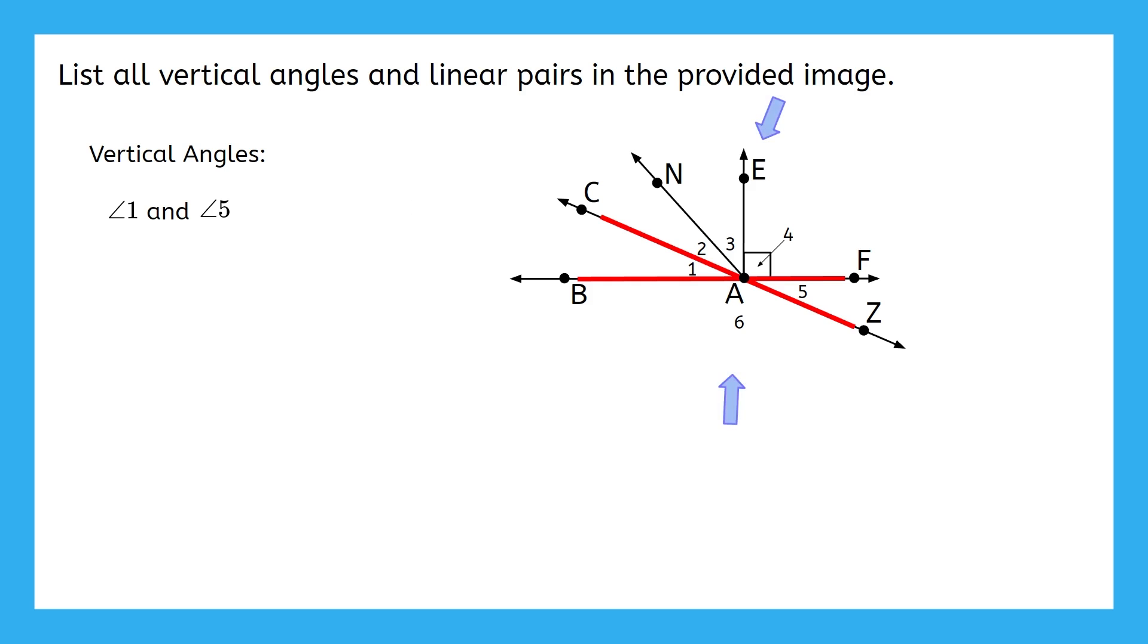And the other vertical angles here are angle 6 and angles 2, 3, and 4 put together. But it's not proper math grammar to write an angle this way, so we'll have to use letters for this one.